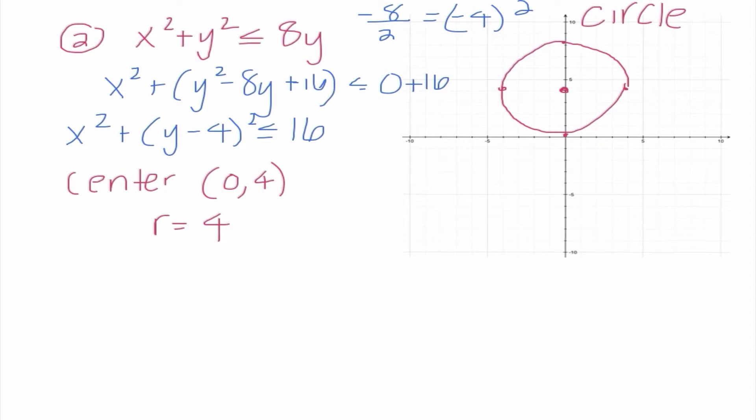Now I need to determine where am I going to shade. So I'm going to try (0,4), and I'm actually going to substitute it into this correct form because I think it's going to make it easier. So I have 0² + (4 - 4)² ≤ 16. Is 0 less than or equal to 16? And we know that the answer to that is definitely yes. So that means that I'm shading inside our circle. There we go.